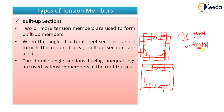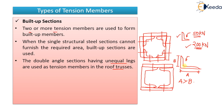Double angle sections having unequal legs are used as tension members particularly in roof trusses. An unequal angle section has two legs of different lengths — for example, leg 'a' is greater than leg 'b'. These are known as unequal leg angle sections. You can use them doubled up, forming a double angle section, which is commonly used in roof trusses. That concludes the video on types of tension members.